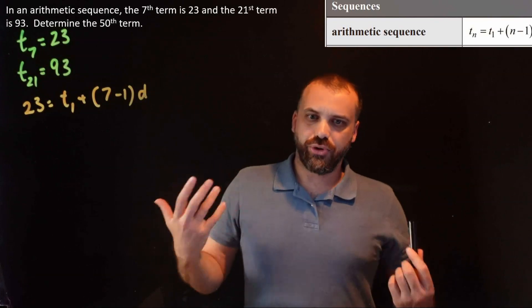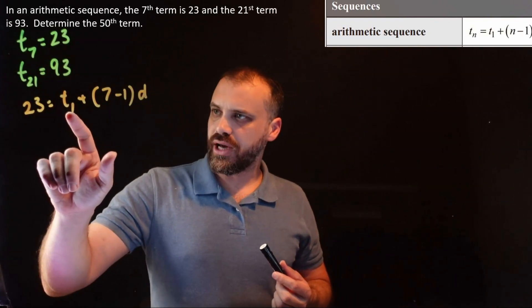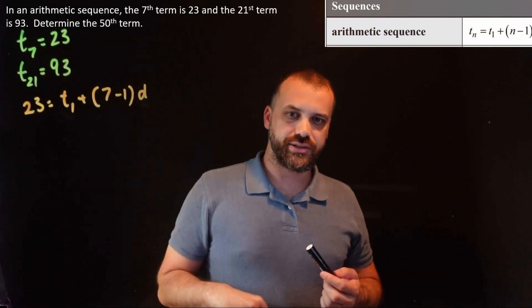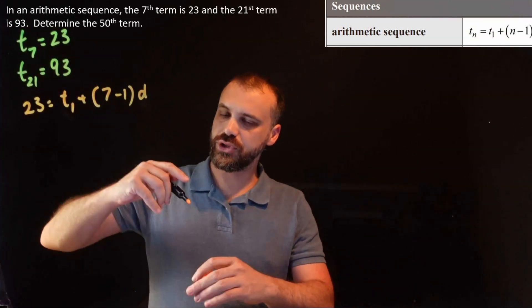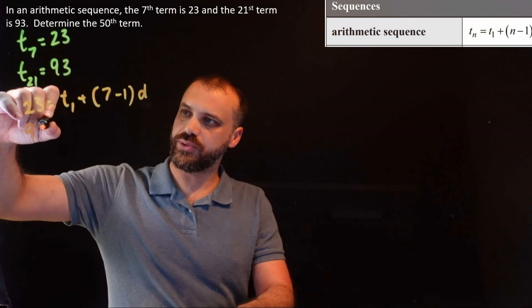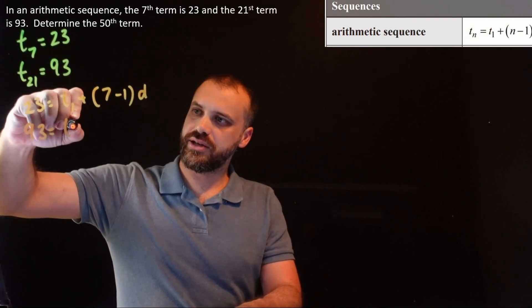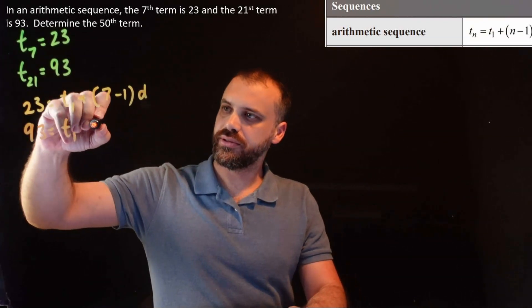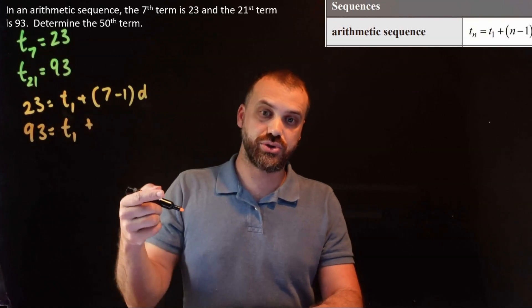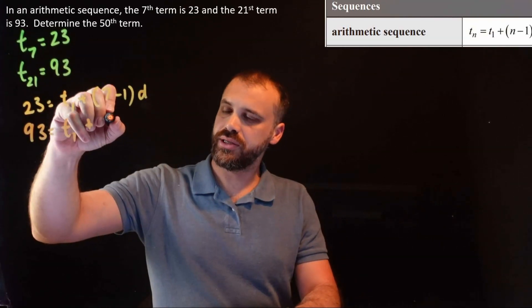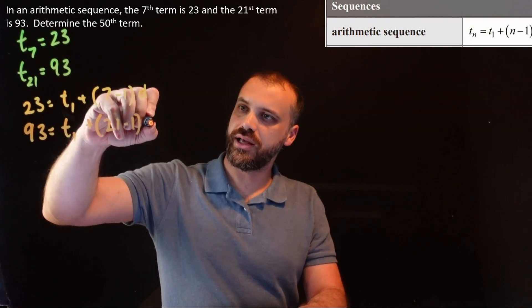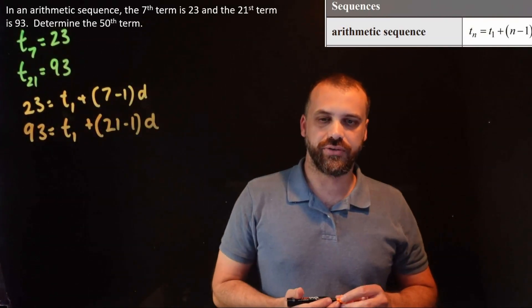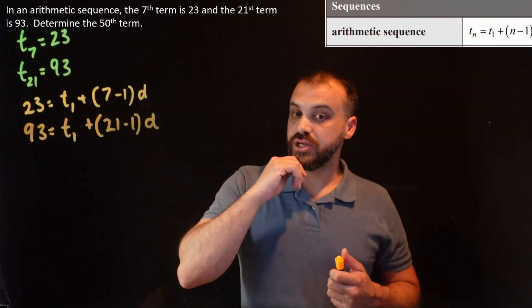So this is a problem because I've got an unknown here and an unknown here. But that's okay because I've also got this other thing here. Term 21 is equal to 93. And again, I don't know term 1. Now, I know it's term 21, so n is 21.